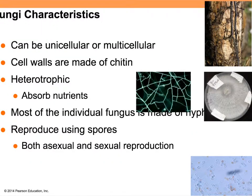All fungi are either unicellular or multicellular, depending on the type. A mushroom you see in the woods is multicellular, but yeast are actually single-celled. All fungi have cell walls made of chitin. Fungi are heterotrophs that absorb their nutrients — they release enzymes into the environment and wait for nutrients to diffuse back so they can absorb that material. Fungi are made of hyphae, which are little filaments; each individual one is a hypha, and when grouped together they look fuzzy or clumpy.